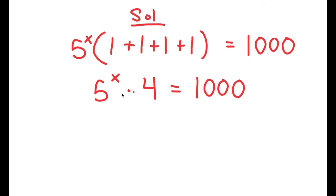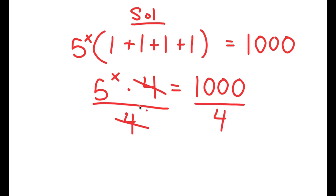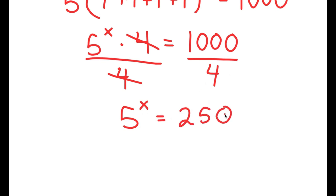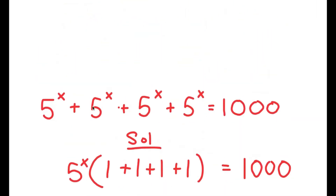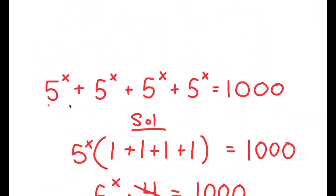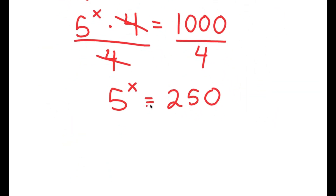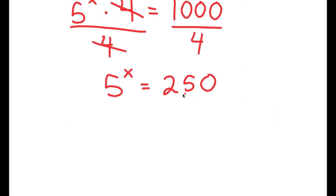Now, we want to isolate x, so I'm going to divide both sides by 4. These two cancel out, and I get 5 to the power of x is equal to 1000 divided by 4, which is 250. So from this large equation, we got down to an equation that is significantly smaller.